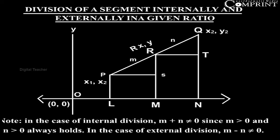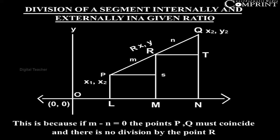Note: In the case of internal division, m + n ≠ 0 since m > 0 and n > 0 always holds. In the case of external division, m - n ≠ 0, because if m - n = 0, the points P and Q must coincide and there is no division by the point R.